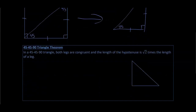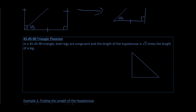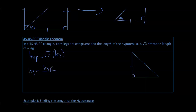The 45-45-90 triangle theorem says: in a 45-45-90 triangle, both legs are congruent, and the length of the hypotenuse is the square root of two times the length of a leg. So the hypotenuse equals the square root of two times the leg, and the leg equals the hypotenuse divided by the square root of two. If each leg is x, then the hypotenuse is x times the square root of two. This pattern applies to every 45-45-90 triangle.